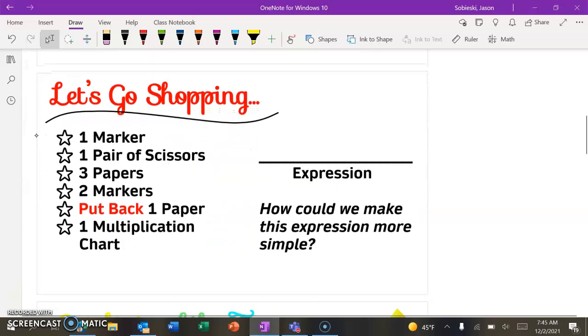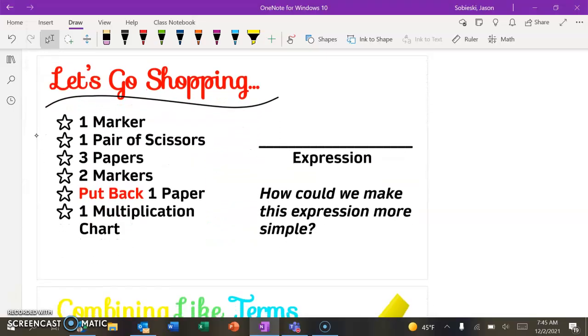So let's real quick look at a real life example. What if you went to Target and you were going to get some school supplies? And you went and got one marker, then you went to the scissors and grabbed one pair, then you went and got three papers, then you went back to get two more markers, then you put back a piece of paper, and then you picked up a multiplication chart as well. It seems like maybe you weren't taking the most efficient route or getting everything at once. But for right now, let's see if we can take this and rewrite it as an expression.